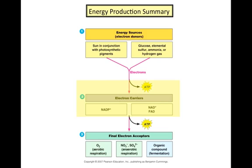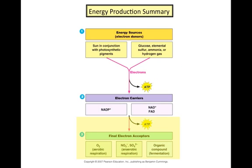As the electron carriers are being reduced in the light reactions of photosynthesis, or the Krebs cycle in cellular respiration, some ATP is generated. The electron carrier molecules drop off the electrons on the electron transport chain to eventually be accepted by a final electron acceptor such as oxygen in aerobic respiration, nitrates, sulfates, and carbonates in anaerobic respiration, and organic compounds in fermentation. The process of electrons flowing down the electron transport chain generates even more energy in the form of ATP.